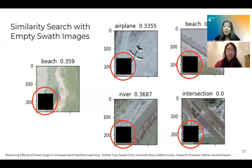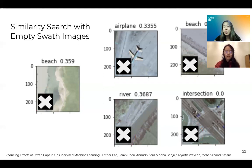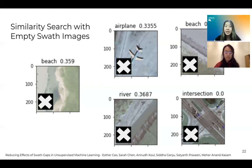Hence, we can see that swath gaps, despite seeming small in size, are actually significant problems that need to be addressed for computer vision models to properly classify satellite imagery. This leads to the solution Esther and I have been devising. Before we get into our proposed solution, an important role we have to discuss is that of convolutional neural networks, or CNNs, and activation maps. We go into more detail about these in our paper, and we'd also be happy to address them further in our live session.